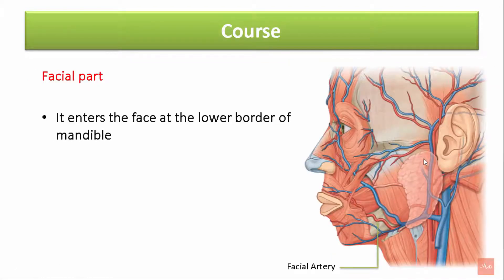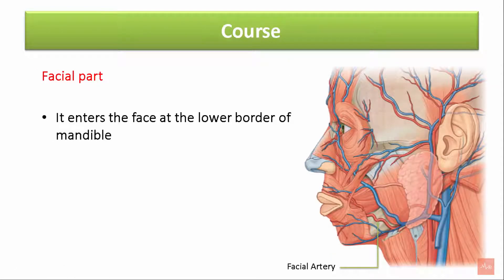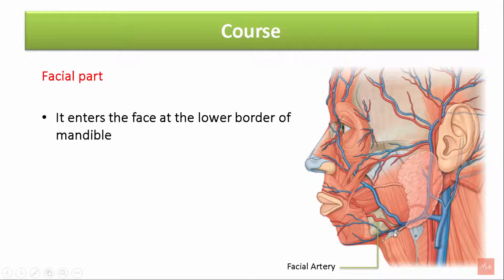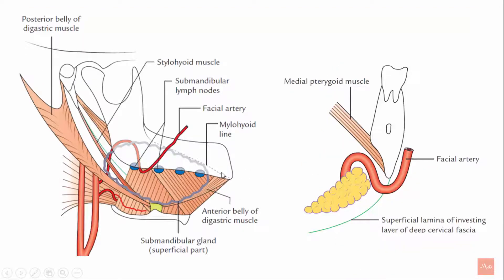The facial part of the facial artery enters the face by piercing the deep cervical fascia. It passes anterior to the masseter muscle at the antero-inferior border of the masseter muscle, runs upwards in a tortuous way and moves forward to reach the angle of the mouth. This picture summarizes the origin and course of the facial artery.